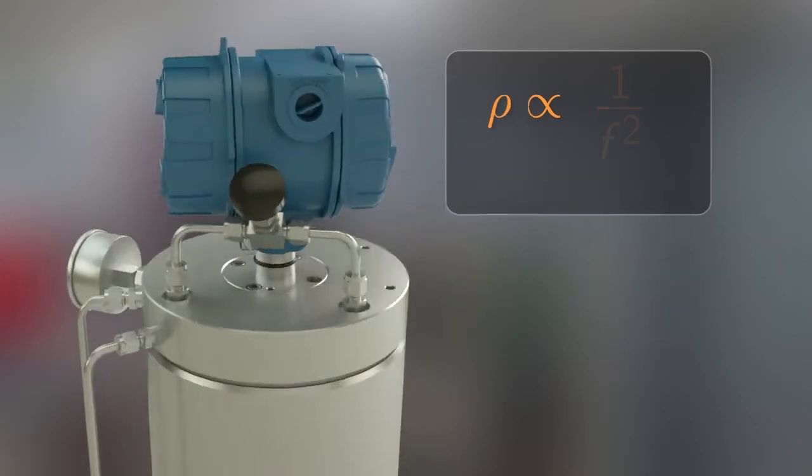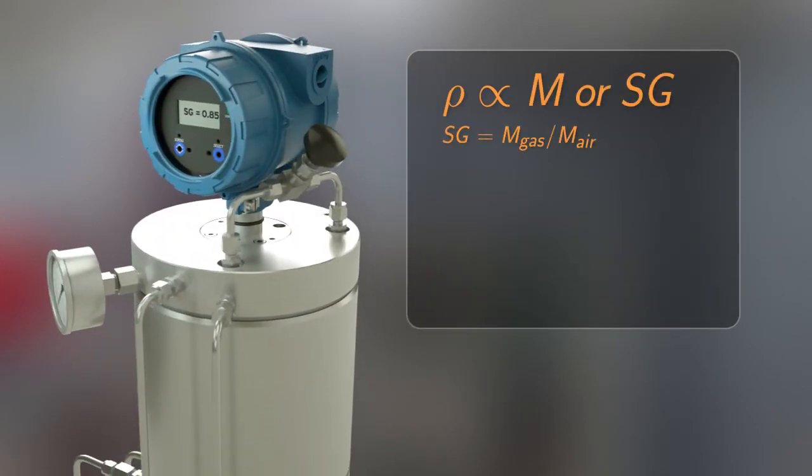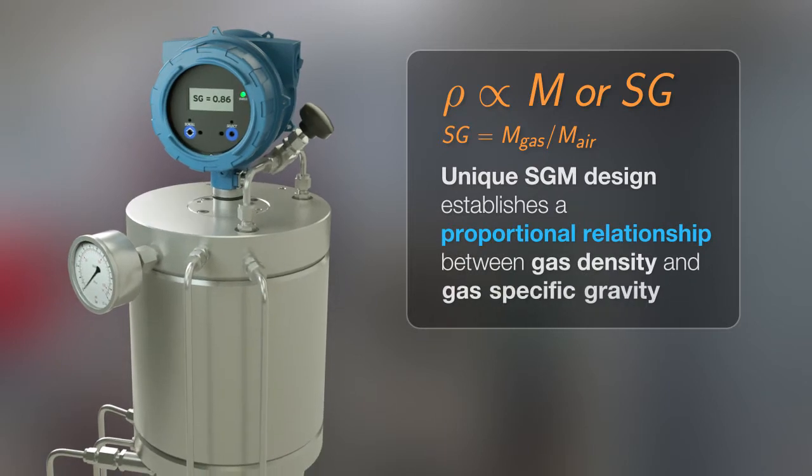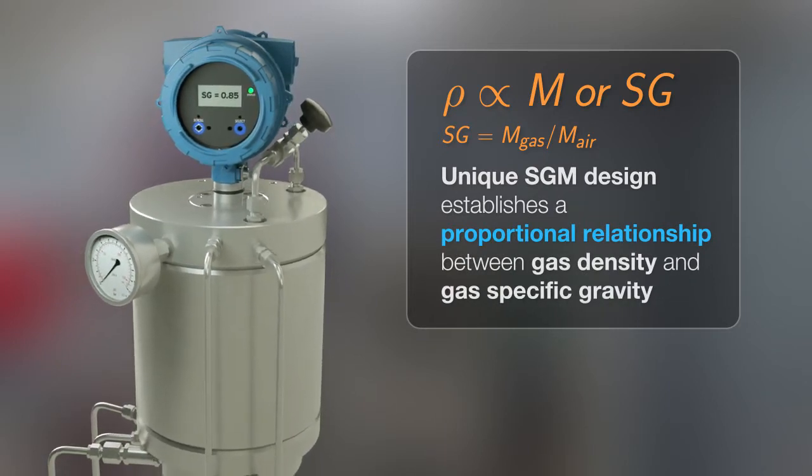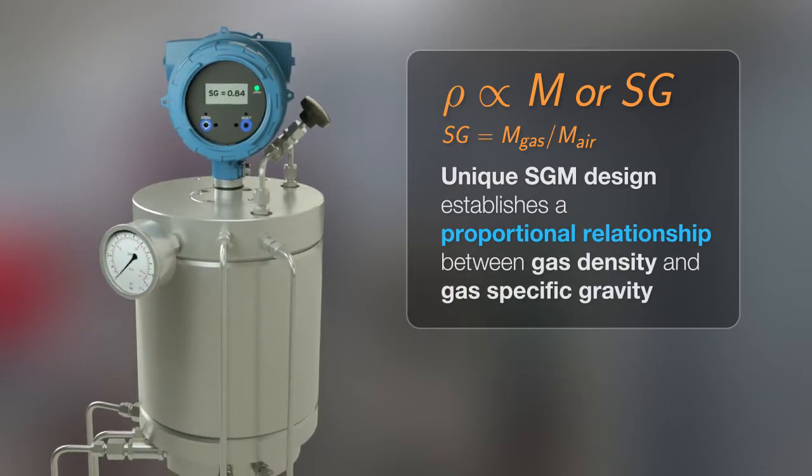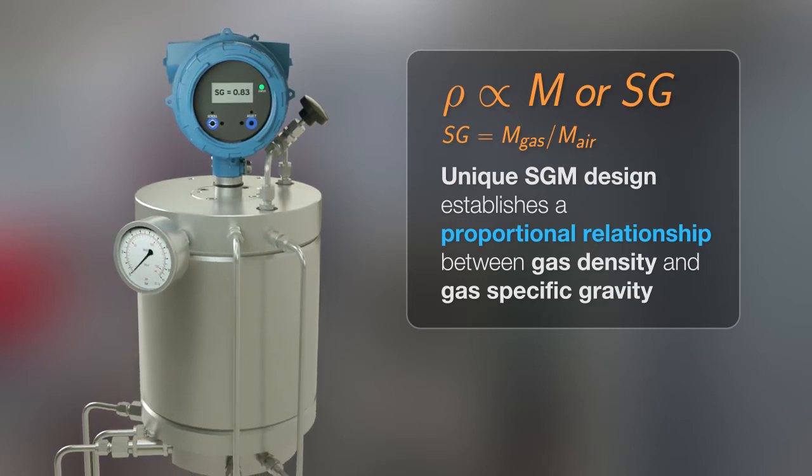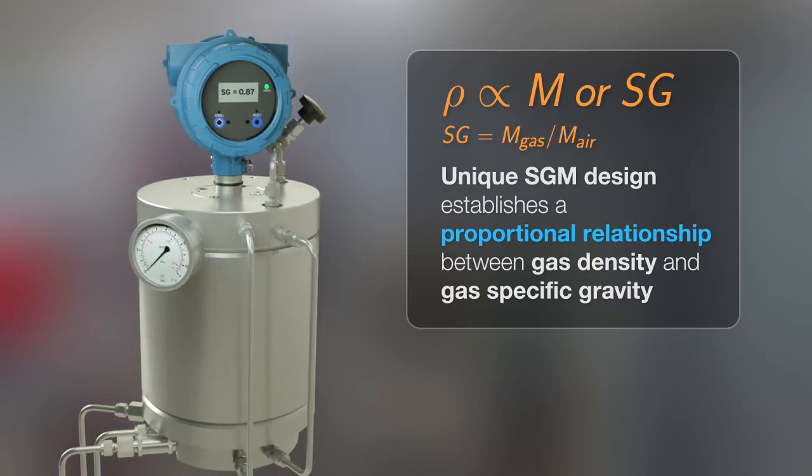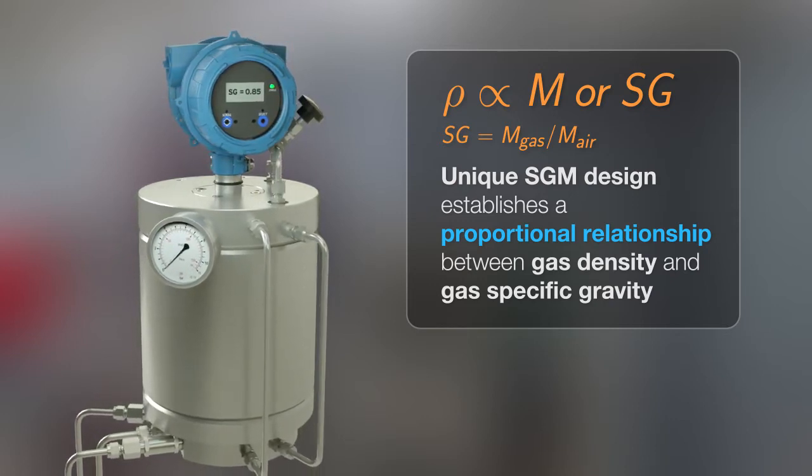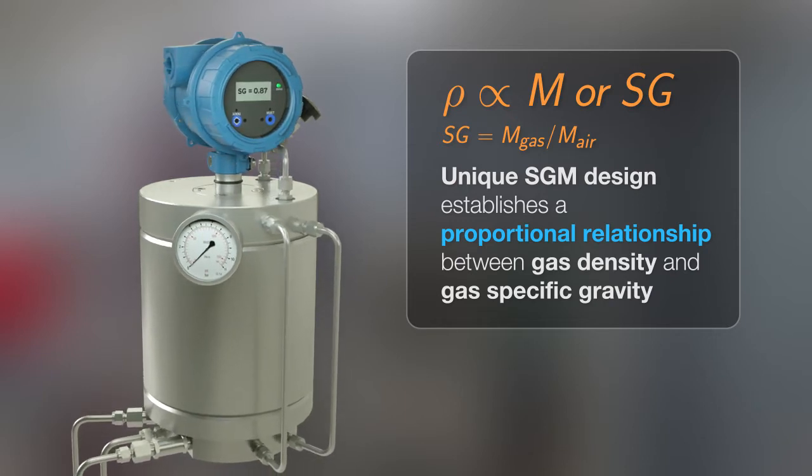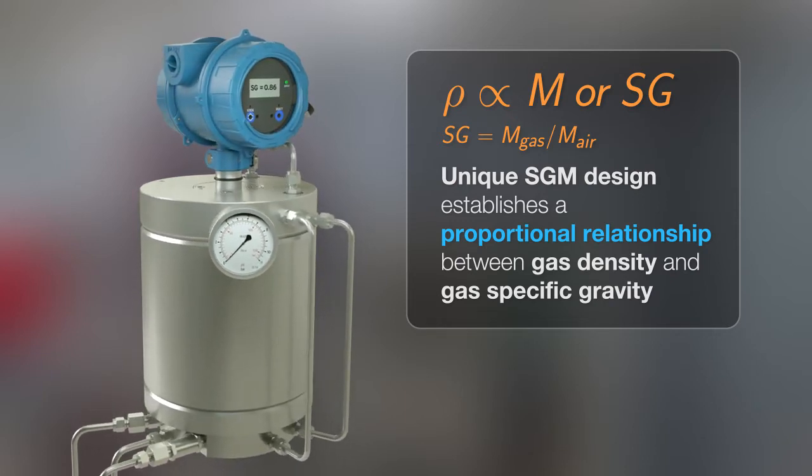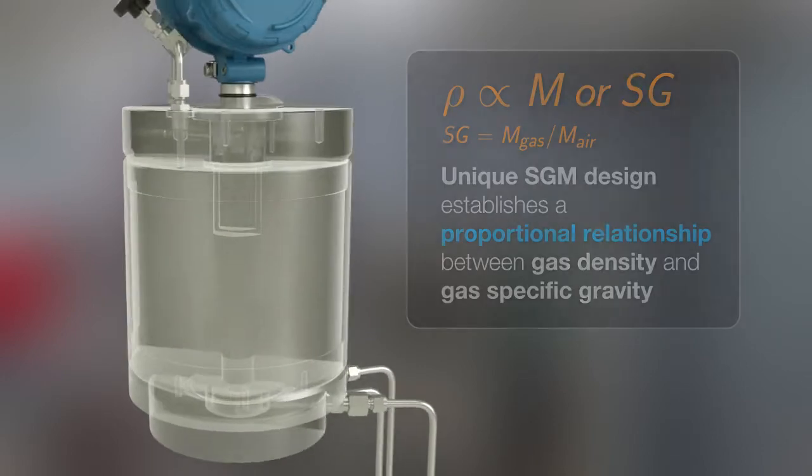However, the SGM takes this one step further, with a unique design that establishes a proportional relationship between the measured gas density and gas-specific gravity. Since molecular weight can be determined from gas-specific gravity, there is a similar relationship between the measured gas density and molecular weight as well. Let's look at the mathematics and mechanics of how this is achieved.